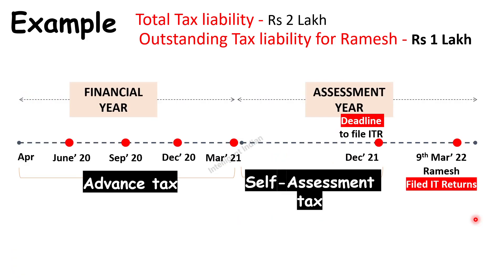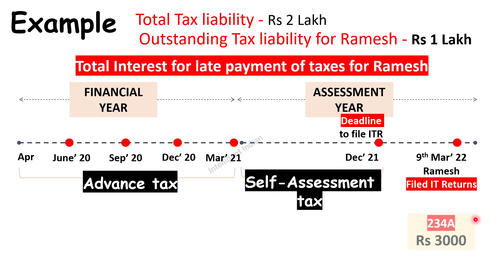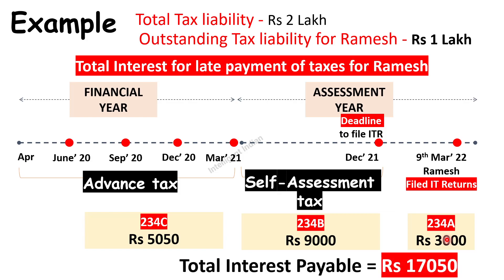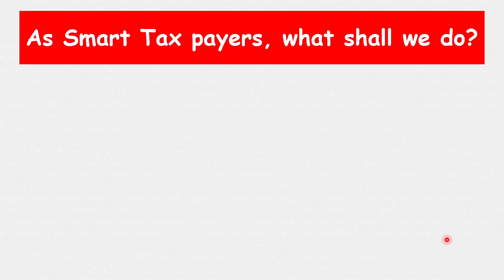Let us look at the total interest Ramesh needs to pay for delaying Rs 1 lakh in tax payment: Section 234A — Rs 3,000; Section 234B — Rs 9,000; Section 234C — Rs 5,050. That is a total of Rs 17,050. Imagine this — it is as good as taking a personal loan. That is why you need to be very careful.